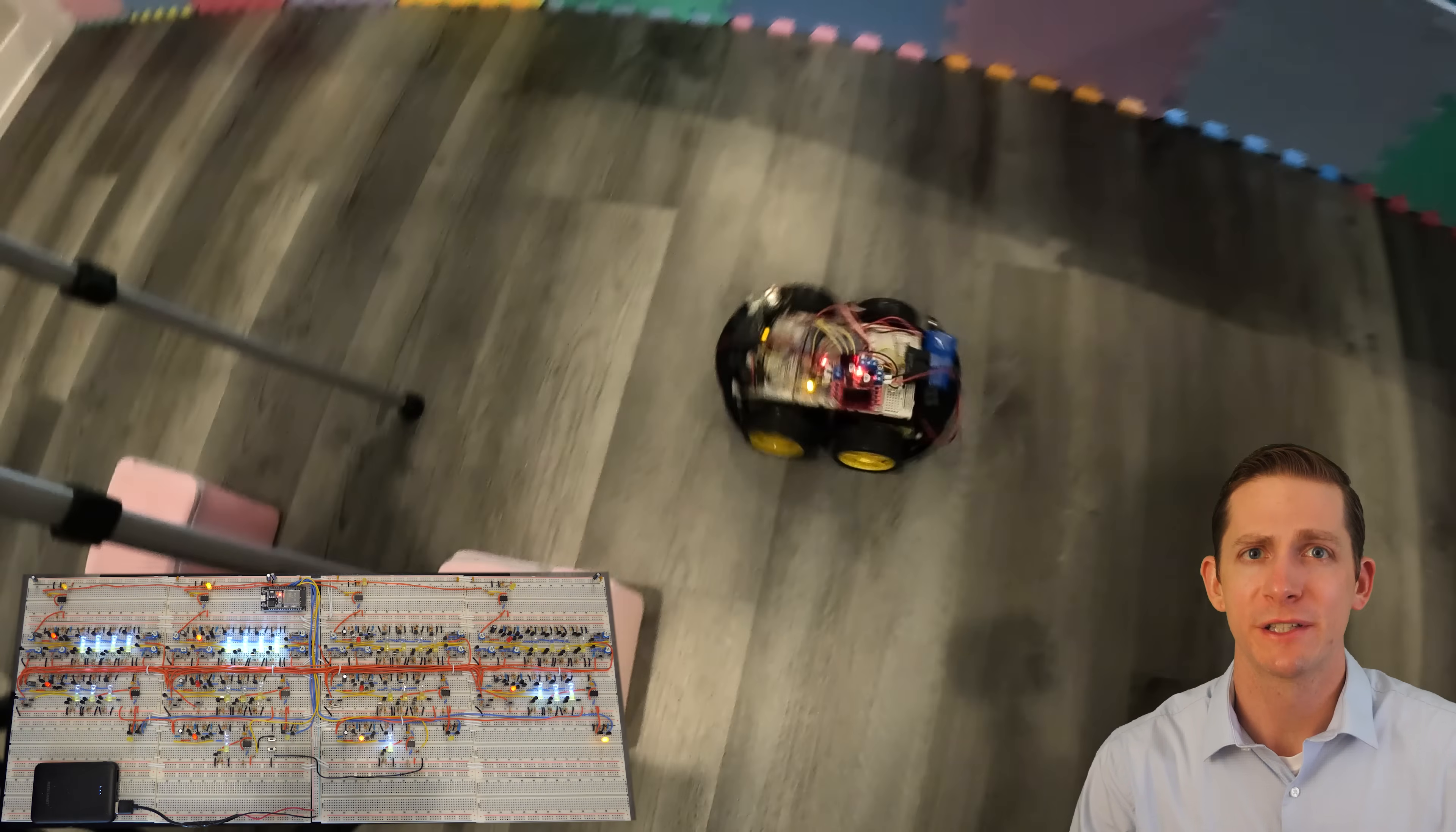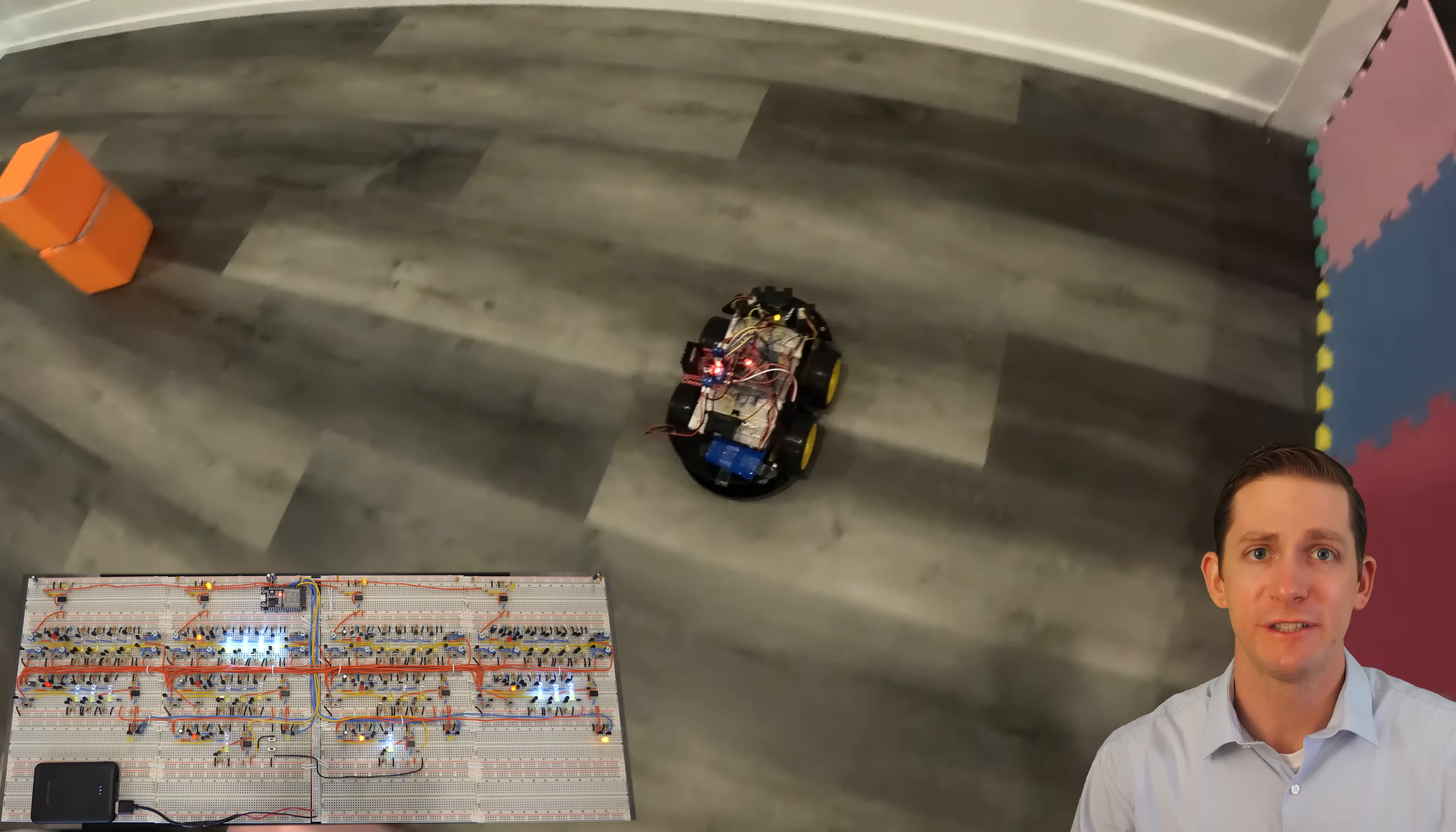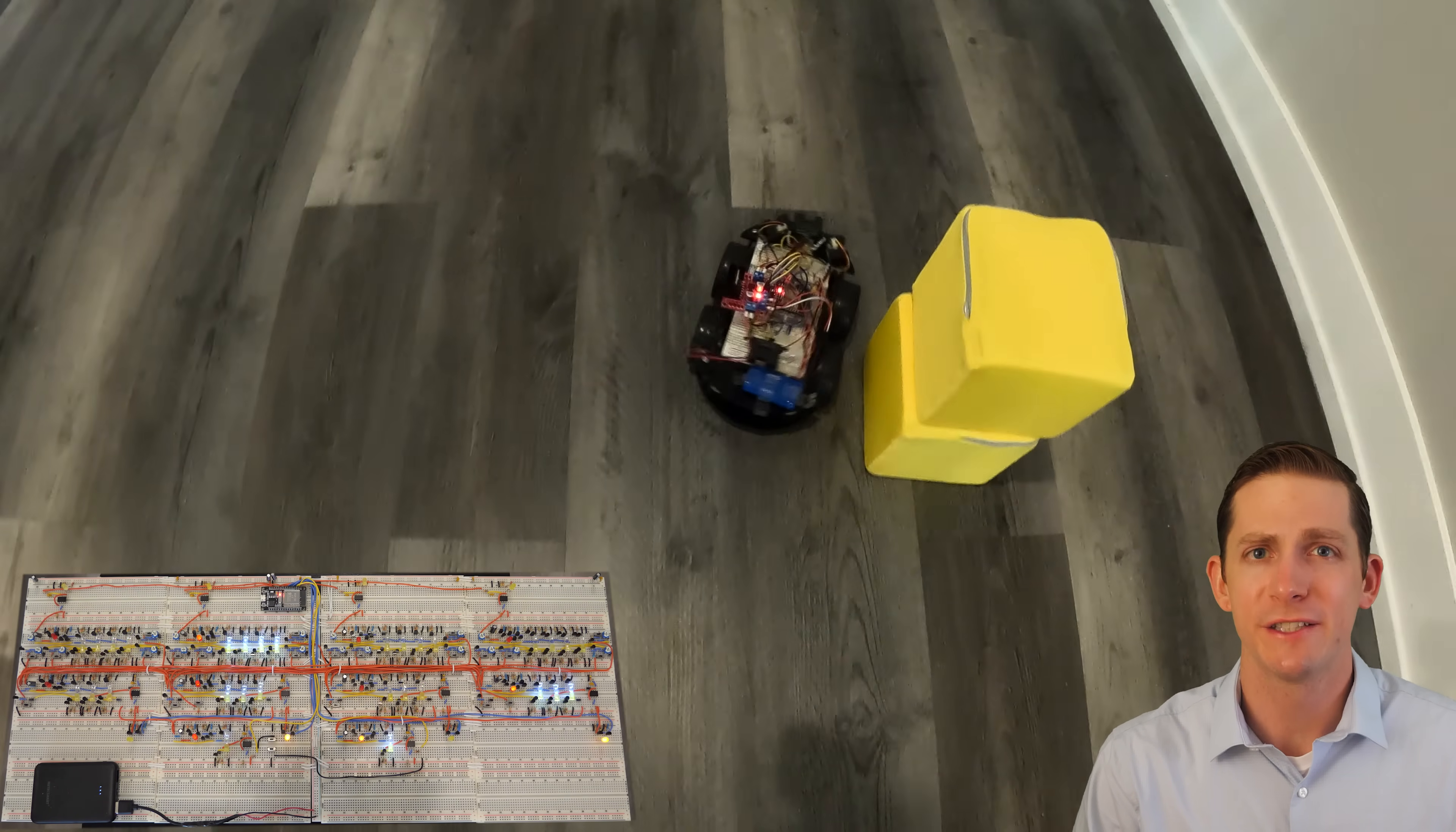Also, the artificial synapses are made with optocouplers, where LEDs are used to send and receive signals. The artificial brain is made up of 10 neurons and 30 synapses and is built as a hardware based neural network.